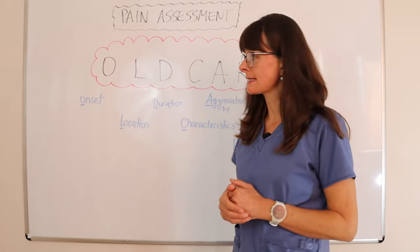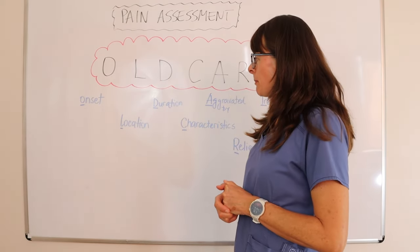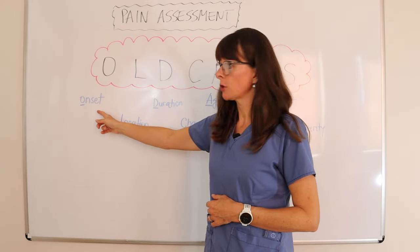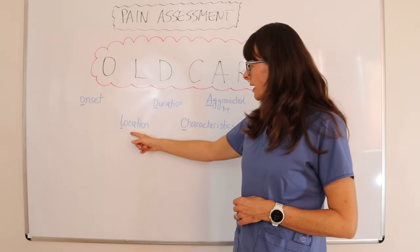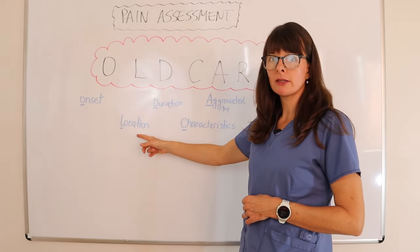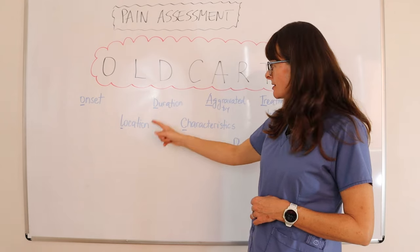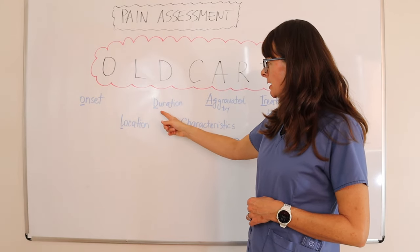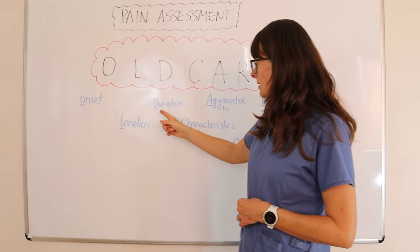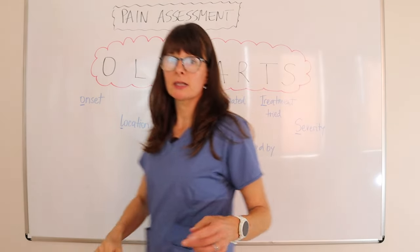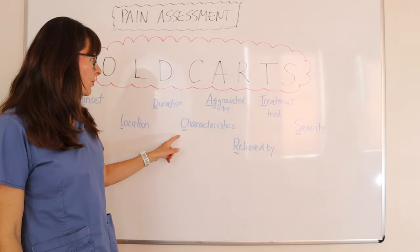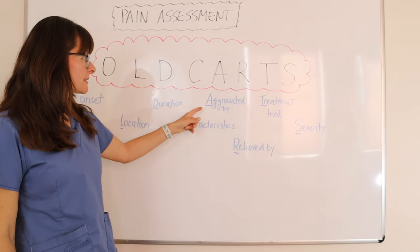So here's an example. The patient states the pain started yesterday after they took a fall. It is located in the right wrist. The pain is intermittent and it is characterized by being throbbing.